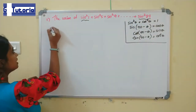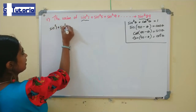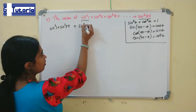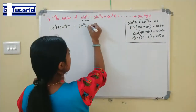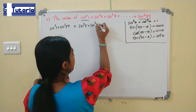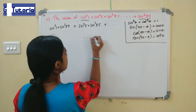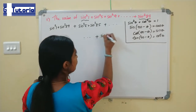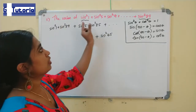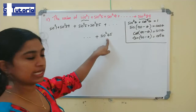The first pair is sin²1 + sin²89. The next pair is sin²5 + sin²85 (the second last term). And so on, with sin²45 being the term which does not form a pair. There are 23 terms total, giving 11 pairs plus 1 extra.